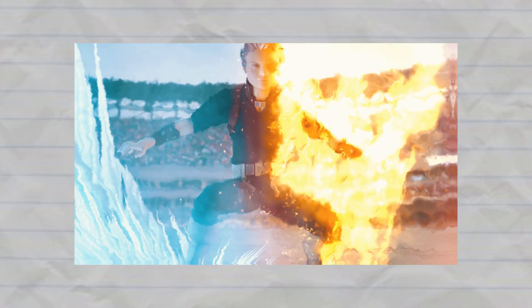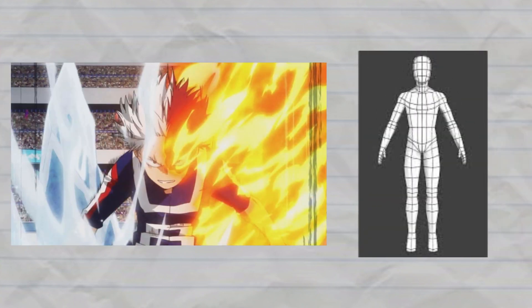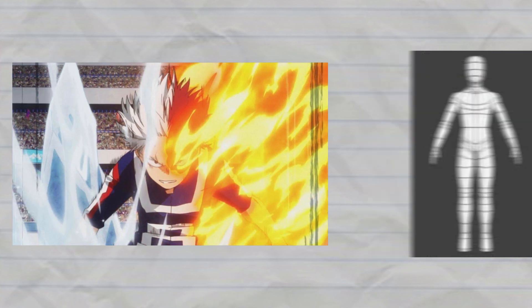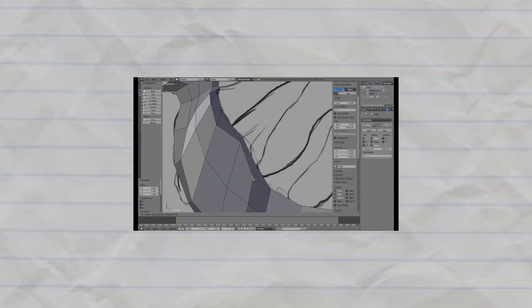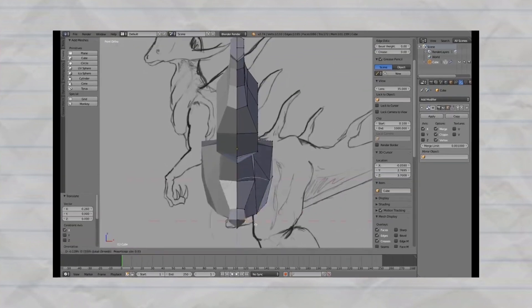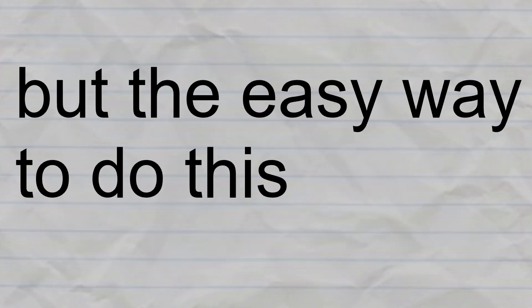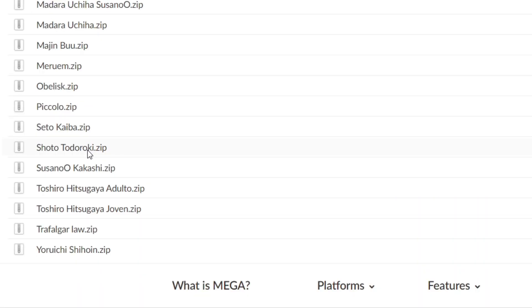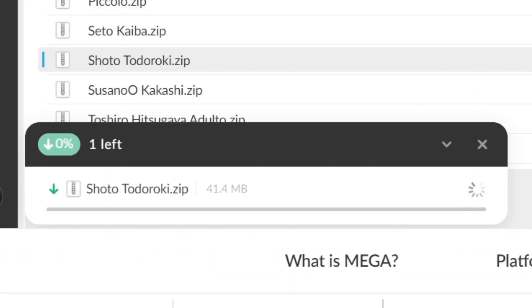So it's no surprise to hear that the shot was made in 3D software for the most part, with the main character Todoroki being a 3D model. Thus, the first step to take when making a shot like this is to get the 3D models you want to use in your scene. One could do this by meticulously modeling and texturing detailed assets, but the easy way is to just grab them online.